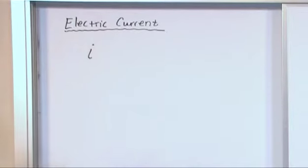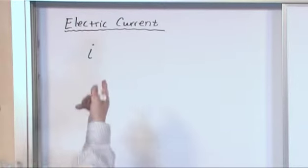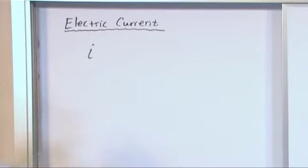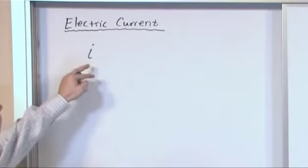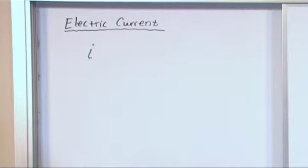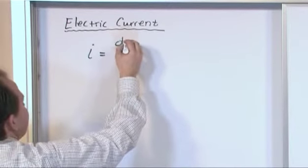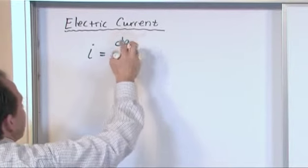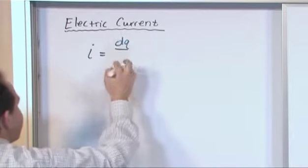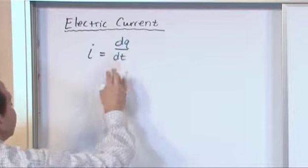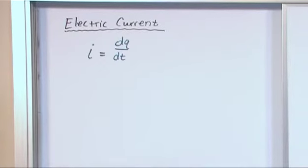You would think a current would be C or something like that, but because of capacitance we use C for that. So you're just going to have to get used to electric current being I. The way we define it is the rate of change of charge, Q is charge. We've always used the letter Q for charge with respect to time. This is in a nutshell how you define electric current.